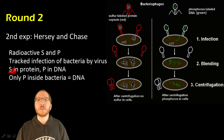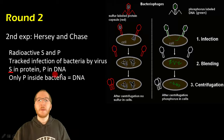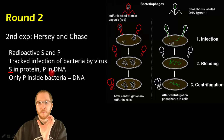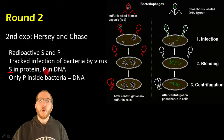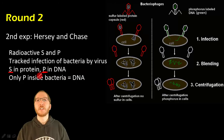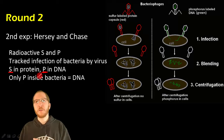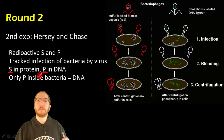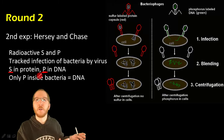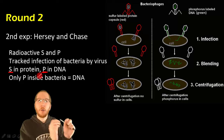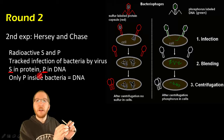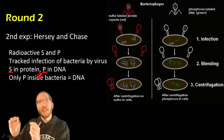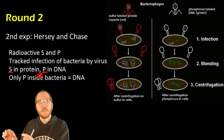Phosphorus is found only in DNA, so in a separate group of viruses they could radioactively tag only the phosphorus. They essentially had one group of viruses built with radioactive phosphorus and a separate group built with radioactive sulfur. This allowed them to track the proteins from the virus separately from the DNA.